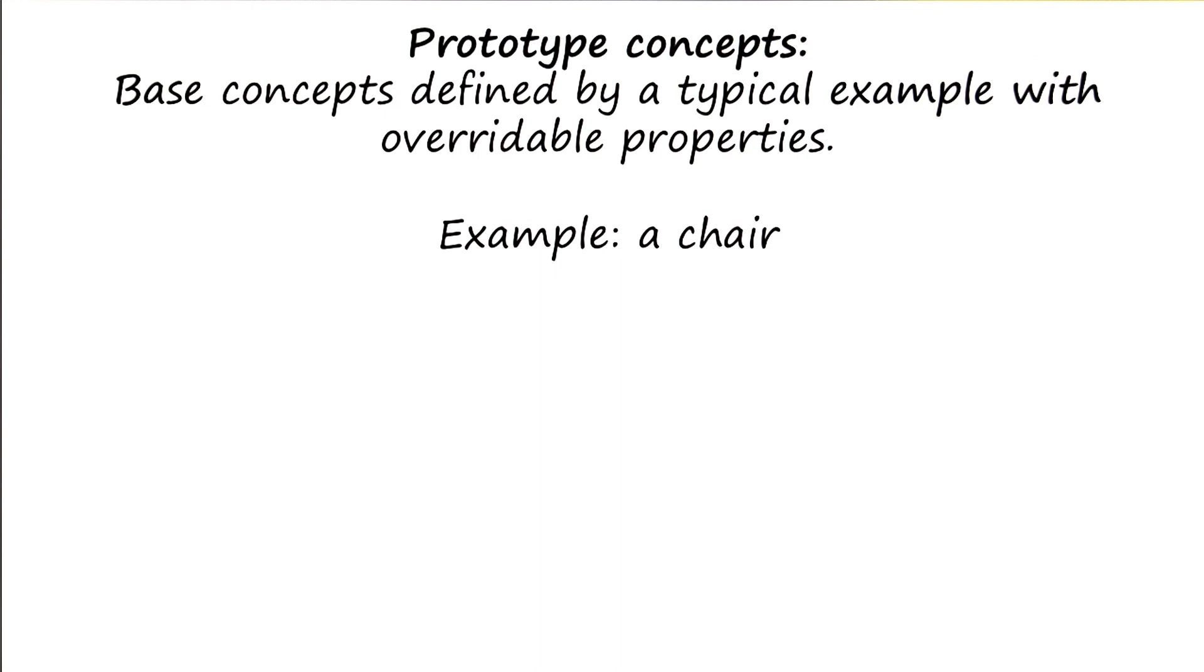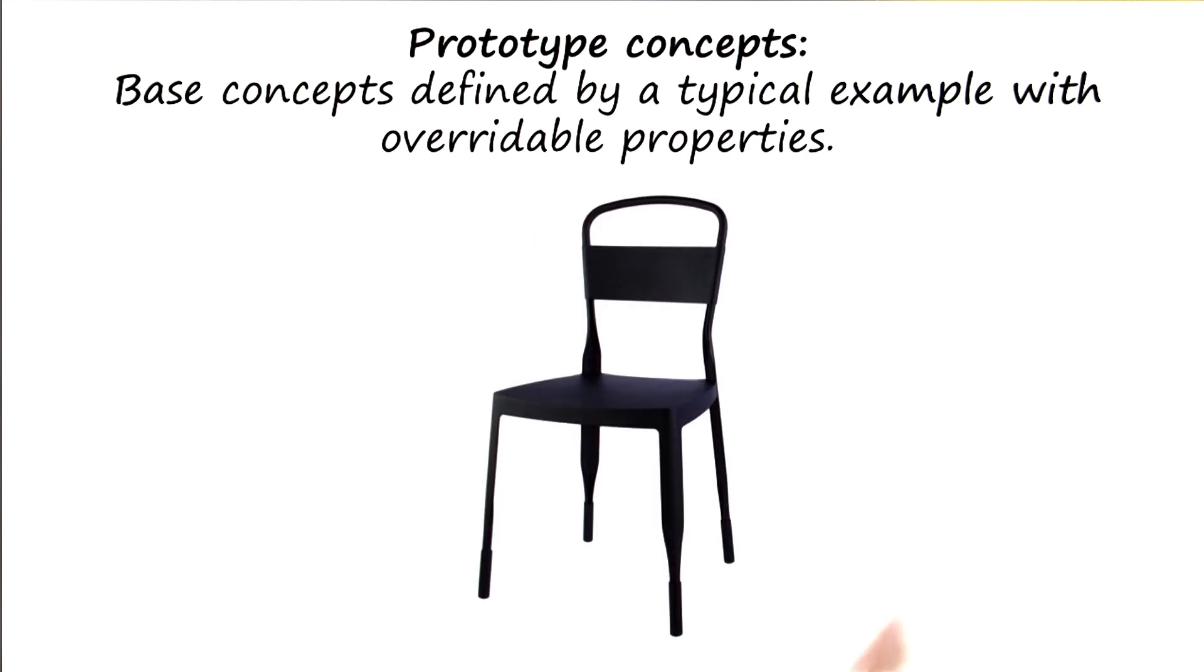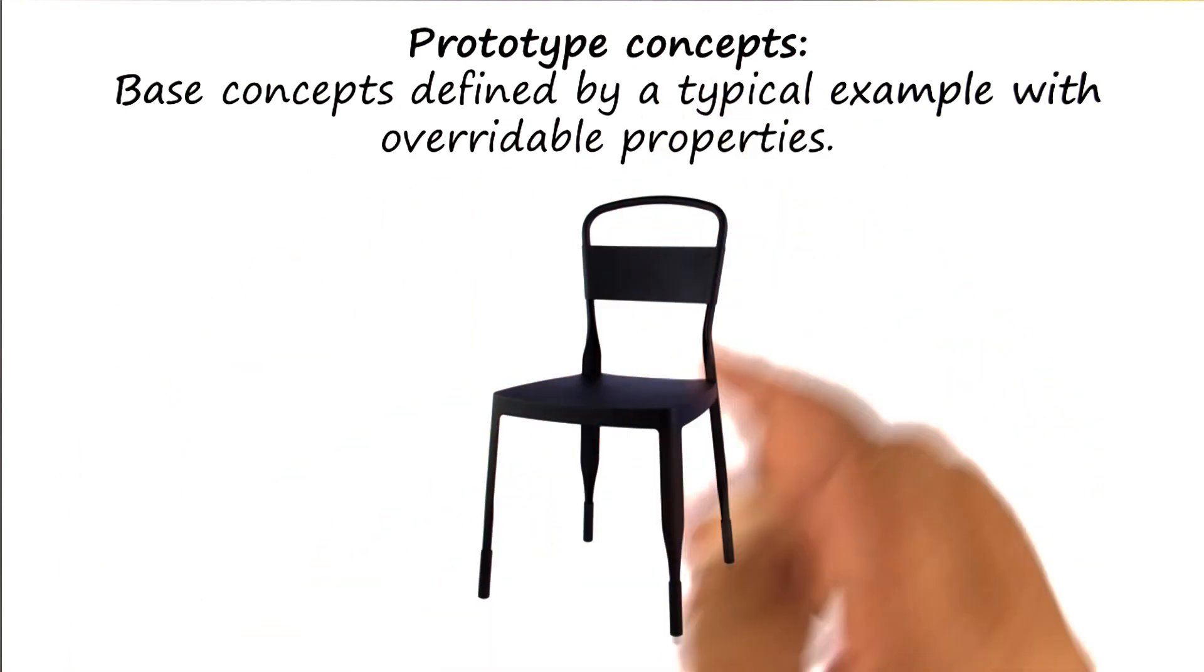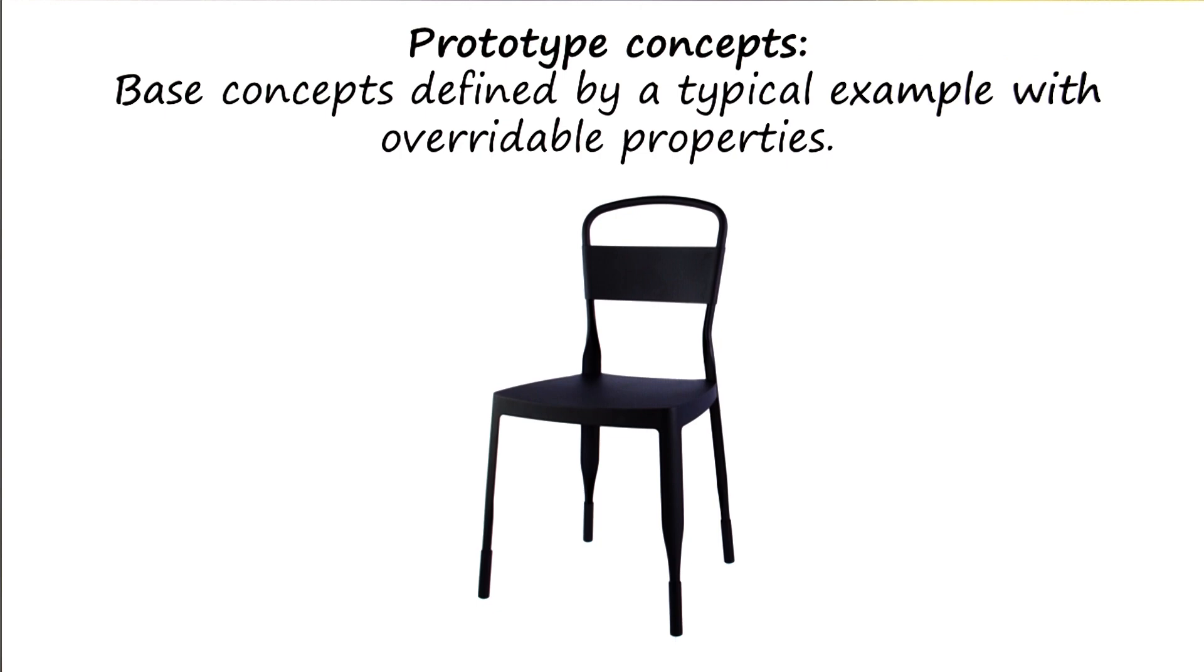Our notion of a prototypical chair may have, for example, that it has a back, it has four legs, and so on. So here might be your and my notion of a prototypical chair. It has a back, it has a seat, it has four legs, and so on.